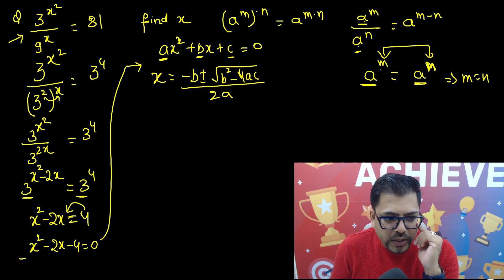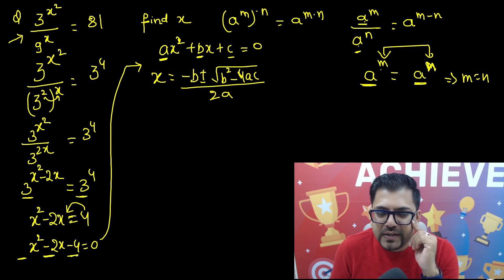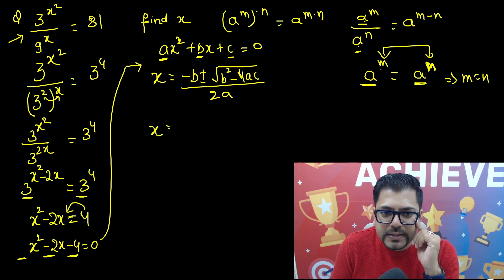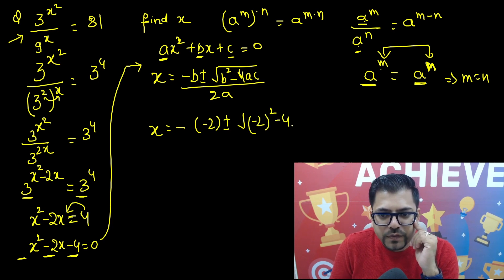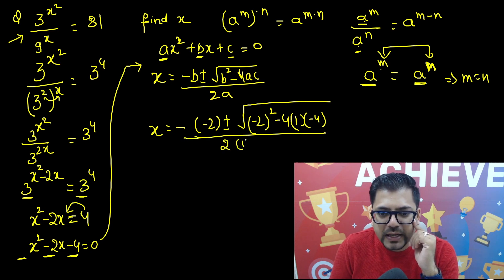So here a value is 1, b value is minus 2, and c value is minus 4. So apply that, x is equals to minus b is minus 2 plus minus root under b squared. b squared is minus 2 whole squared minus 4. a is nothing but 1 and c is nothing but minus 4. So we have got this entire thing and whole divided by 2a. Whole divided by 2 and what is a? a is nothing but 1.